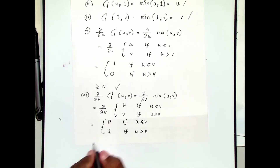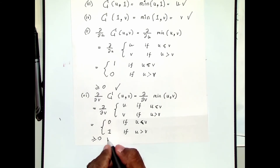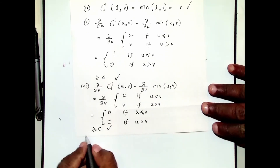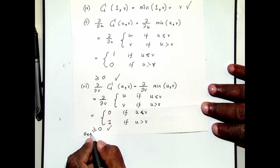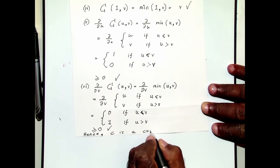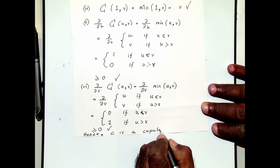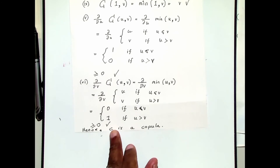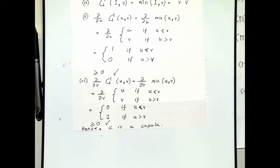Hence the partial derivative is greater than or equal to zero, so all six conditions are satisfied. The conclusion is: C is a copula. That's example number two. The third example is a little less trivial — the two examples we looked at so far are pretty trivial. This is example number three.